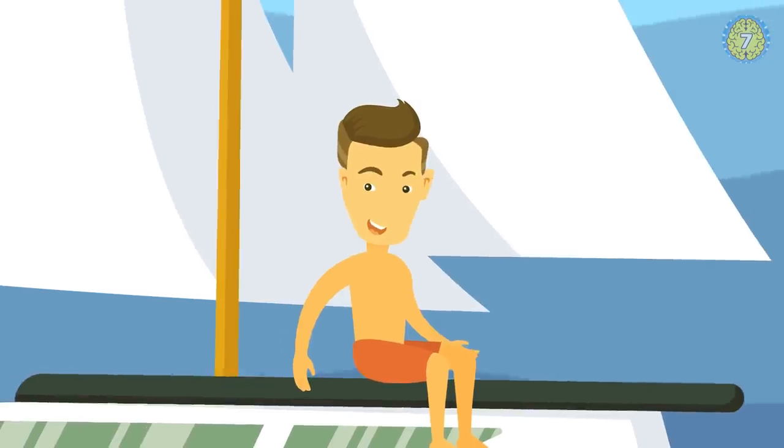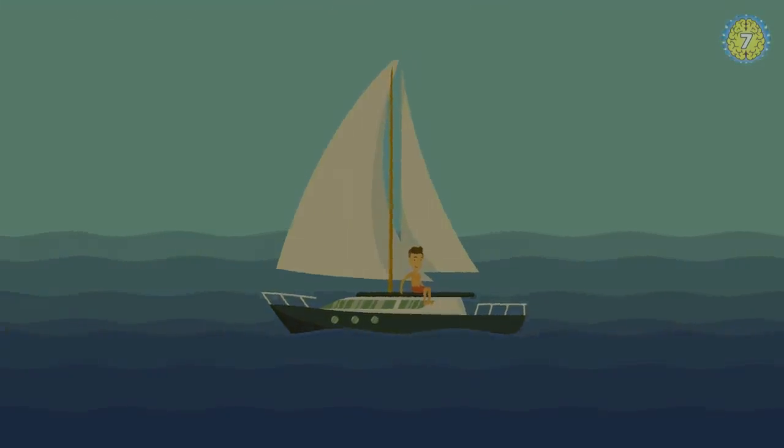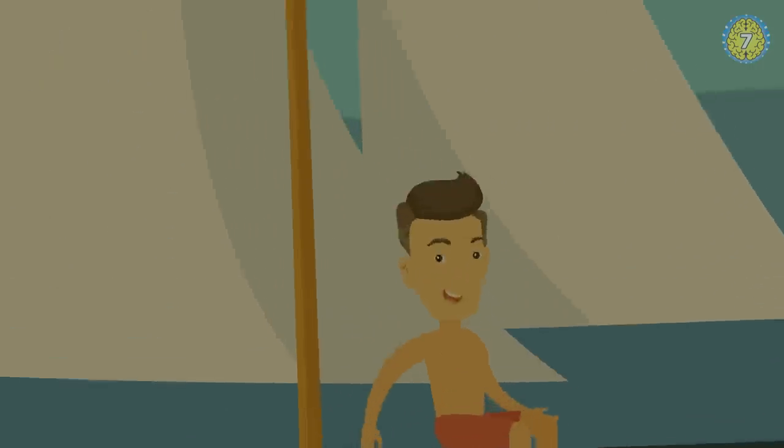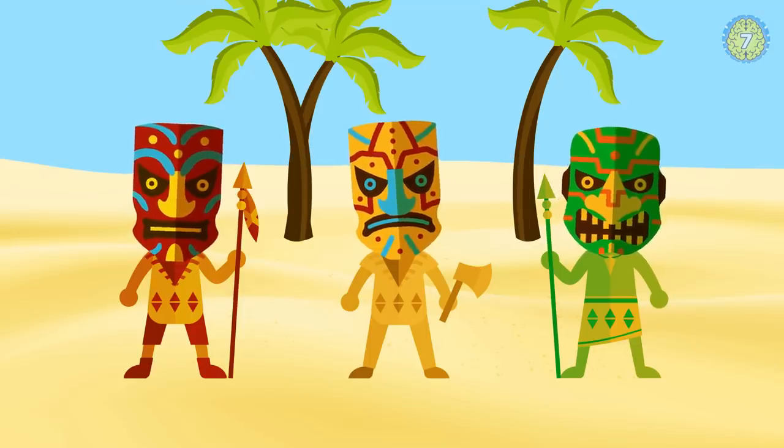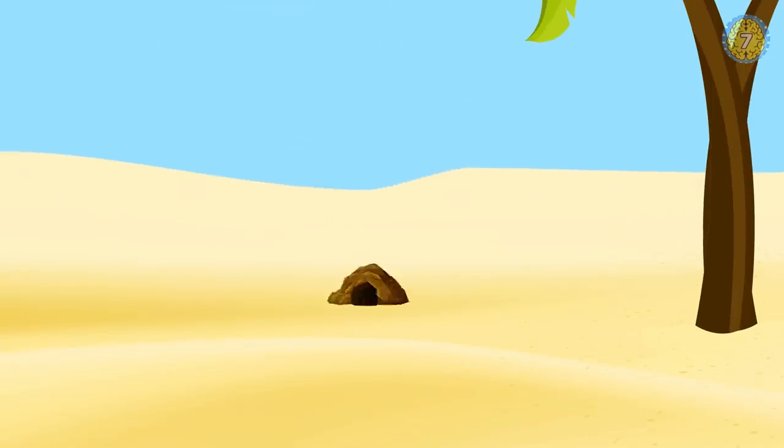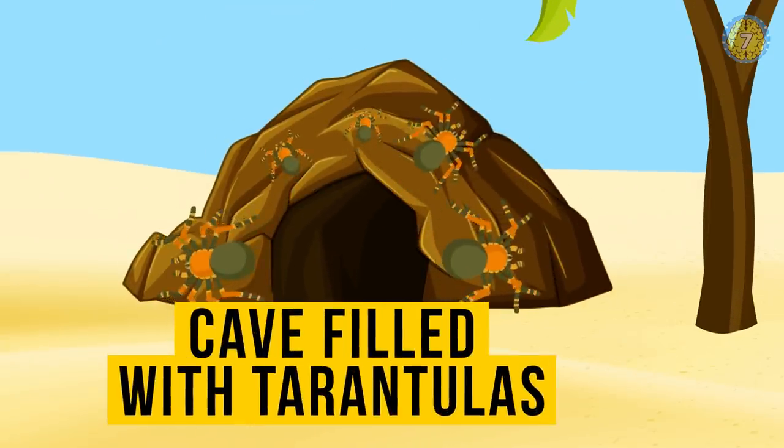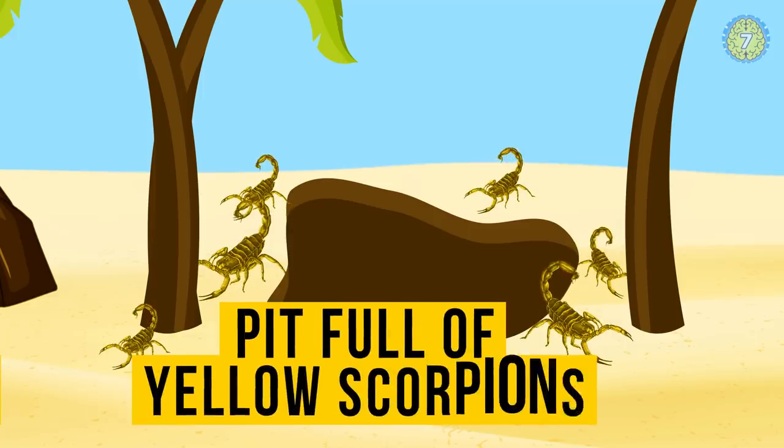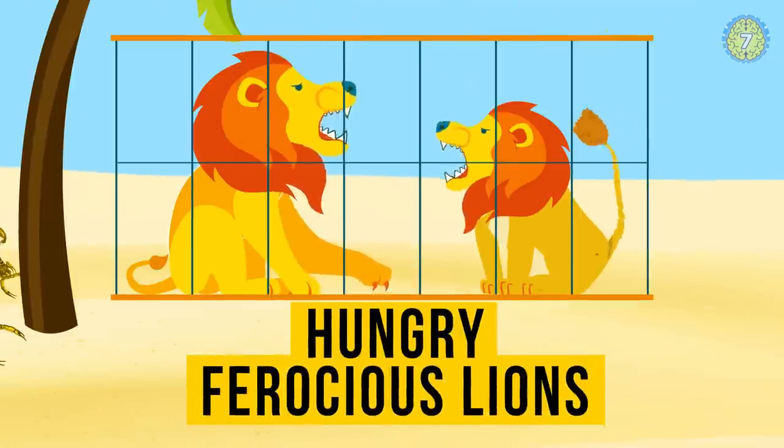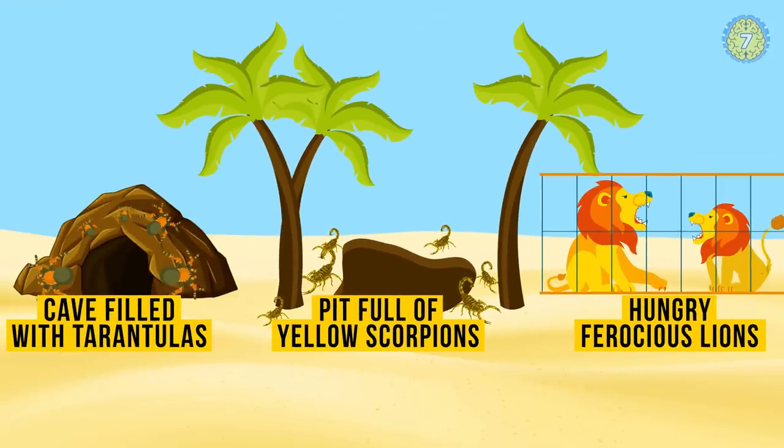You're sailing around the world when you get caught in a terrible storm. As your boat is fighting the huge waves and gale force winds, you suddenly hit your head against the mast and lose consciousness. When you come around, you find yourself on a beach surrounded by angry locals. They can't decide what to do with you, so they give you three options. They can send you to a cave filled with tarantulas, throw you in a pit full of yellow scorpions, or hand you over to hungry, ferocious lions. You have only 10 seconds to choose the option that will let you survive.